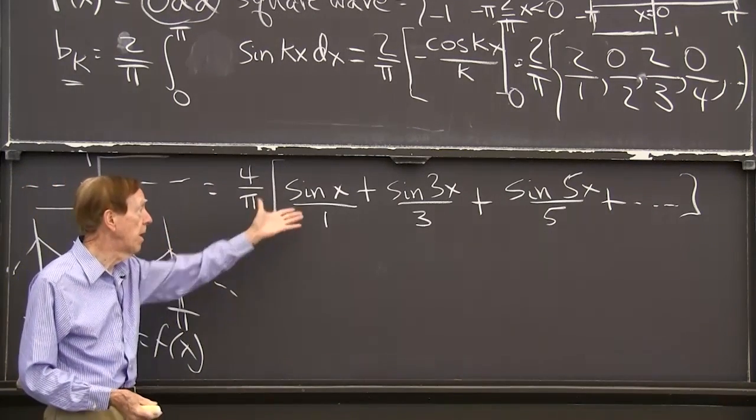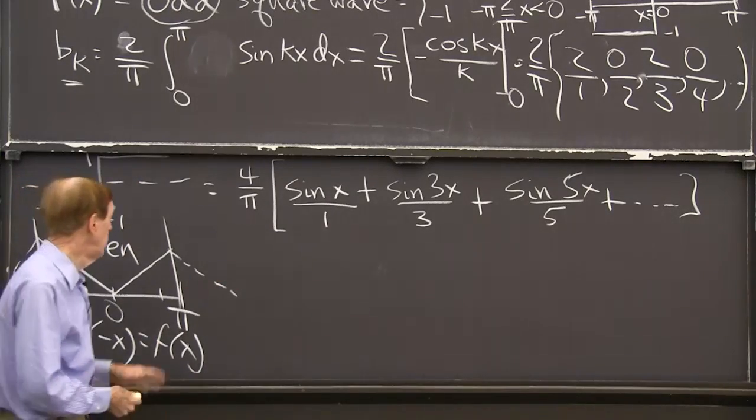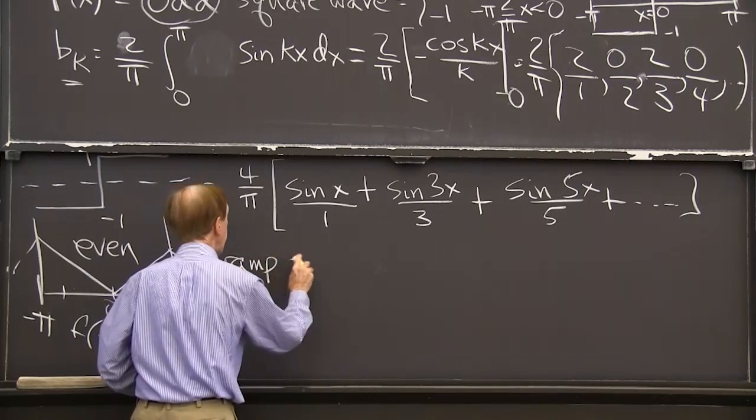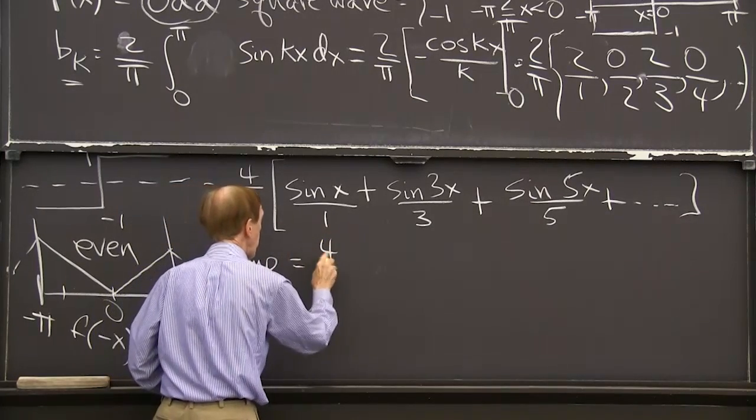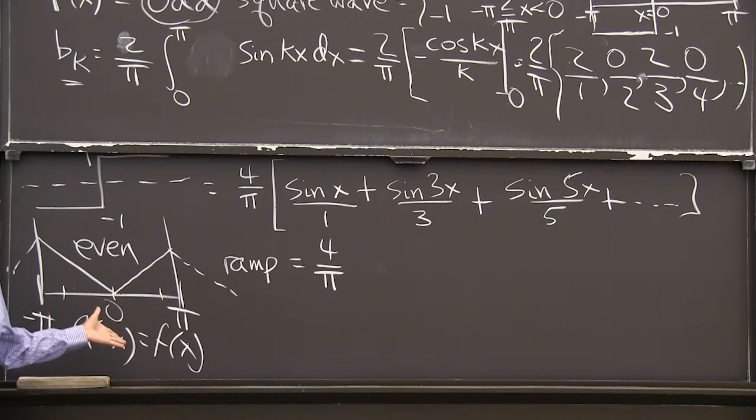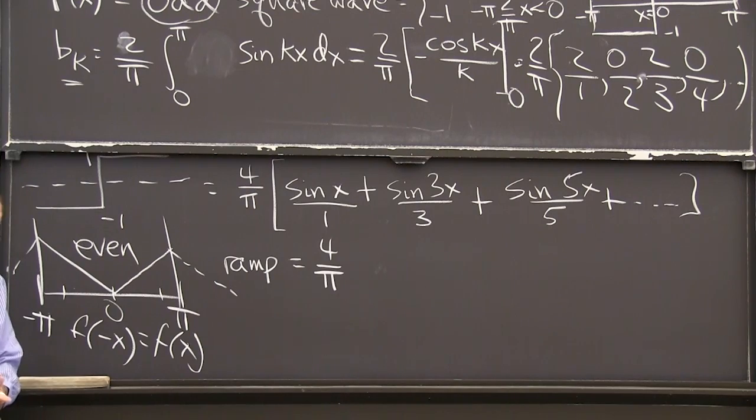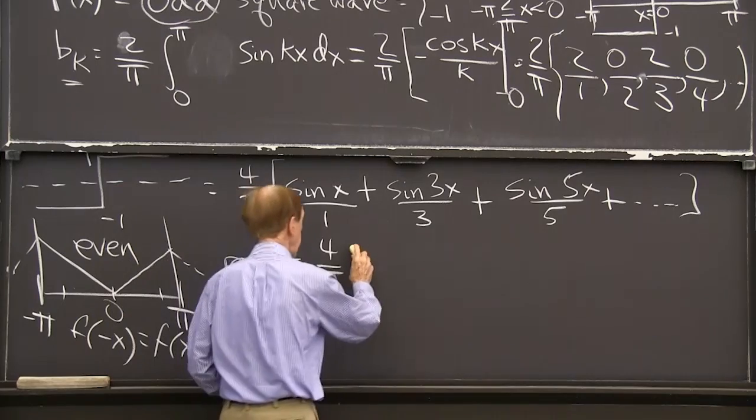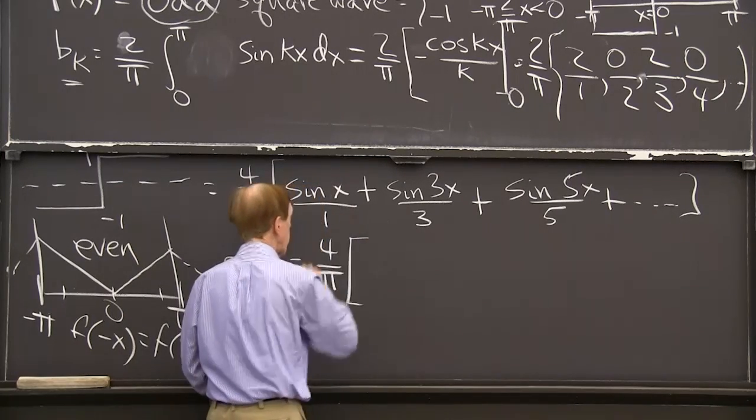And of course, since I'm just integrating, I might as well just integrate that series. So this is this ramp, this repeating ramp function is going to be 4 over pi. I could figure out the cosine coefficients, the a's, patiently. But why should I do that when I can just integrate?